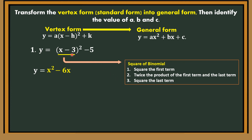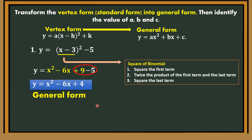Last step: square the last term — carry the sign. This is negative 3 squared, that is negative 3 times negative 3, so the answer is positive 9. Just copy minus 5. Positive 9 minus 5 can still be simplified. So: y is equal to x squared, copy minus 6x, then 9 minus 5 is 4. This is now the general form. We can now identify the value of A, B, and C. The value of A is 1 — there is automatically a 1 here. The value of B is negative 6. The value of C is positive 4.